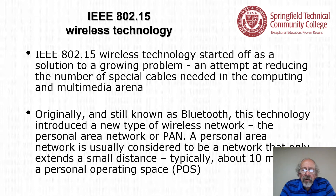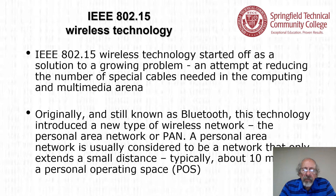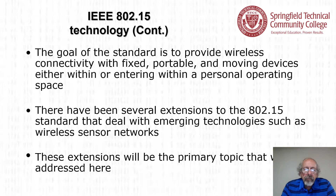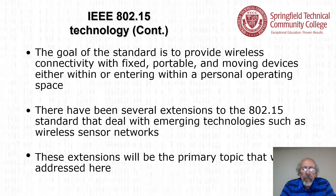802.15 wireless technology started off as a solution to a growing problem — an attempt at reducing the number of special cables needed in the computing and multimedia arena. Originally, and still known as Bluetooth, this technology introduced a new type of wireless network: the personal area network, or PAN. A personal area network is usually considered to be a network that only extends a small distance, typically about 10 meters — a personal operating space. There have been several extensions to the 802.15 standard dealing with emerging technologies such as wireless sensor networks.